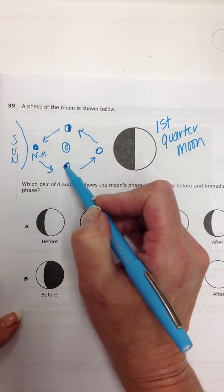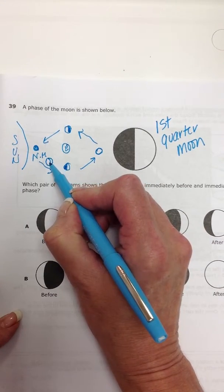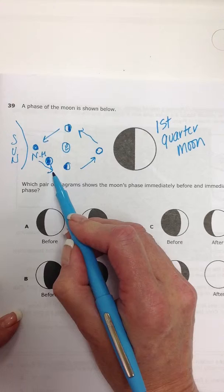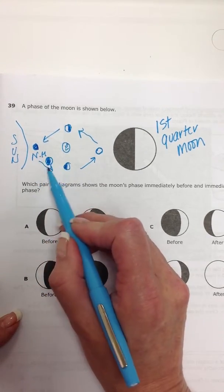So between these two phases, you would see a waxing crescent, right? So we're dark, new moon, a little bit of light on the right,